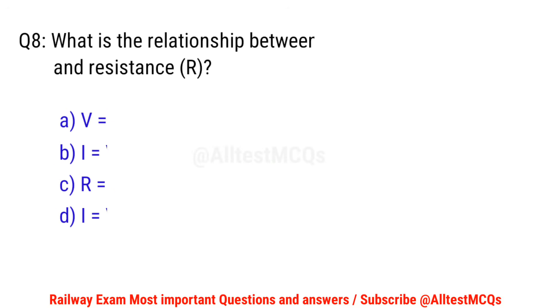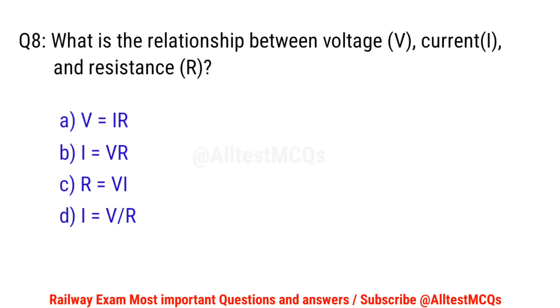Q8. What is the relationship between voltage, current and resistance? D — right option is A. V equals IR.